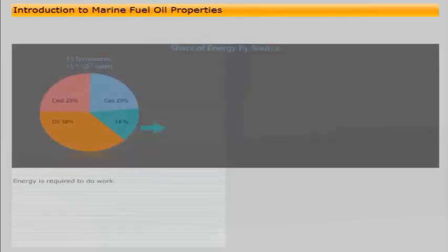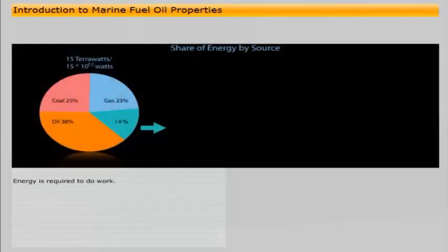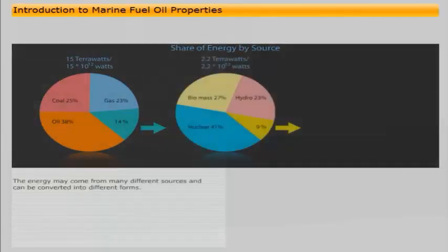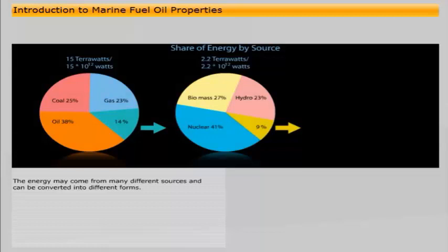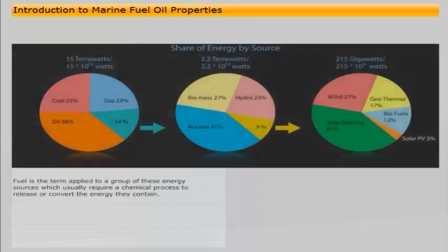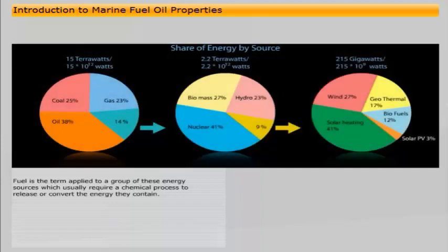Energy is required to do work. The energy may come from many different sources and can be converted into different forms. Fuel is the term applied to a group of these energy sources, which usually require a chemical process to release or convert the energy they contain.